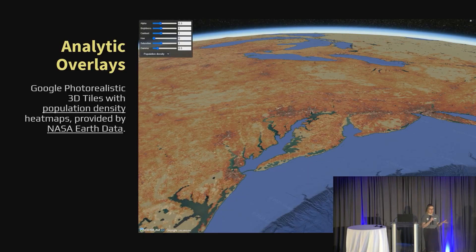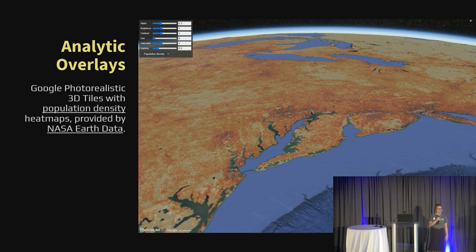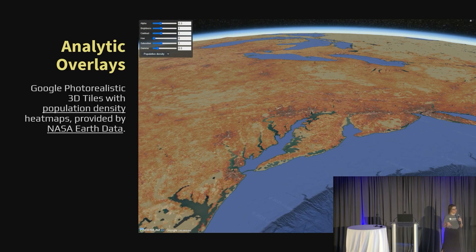Another use case is to add analysis to your 3D tiles datasets. This is, again, Google Photorealistic 3D tiles, but in this case draped with a population heat map raster layer provided by NASA. This is quite similar to some of the analytic datasets from the keynote this morning. There was recently a hackathon where they used Google analysis layers to showcase flood risk areas, draping that imagery on top of Google 3D tiles. This really grows the pie of what's possible when you're using 3D tiles as your global terrain and building provider.